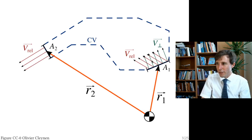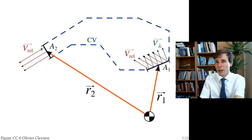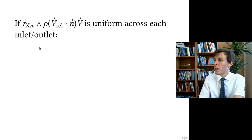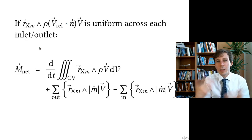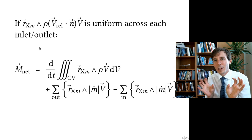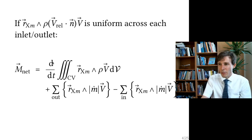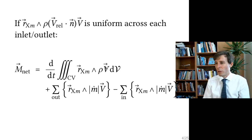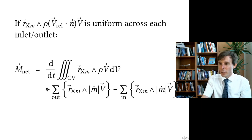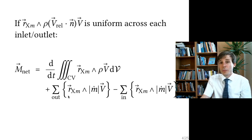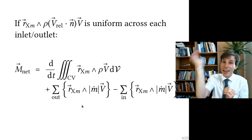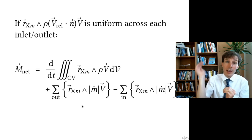With uniform flow at inlet and outlet, the equation simplifies. You still have the unsteady term — the rate of change of angular momentum inside the control volume — and then you have the sum: for the outlet, the cross product of position and linear momentum, which gives the angular momentum.